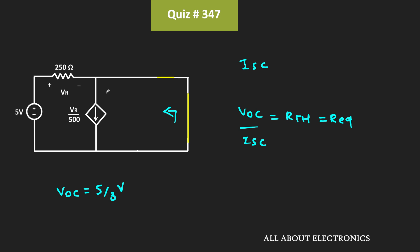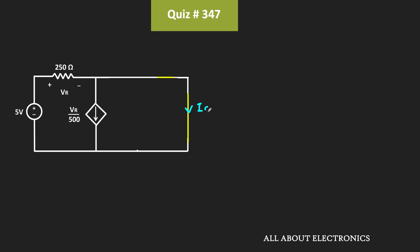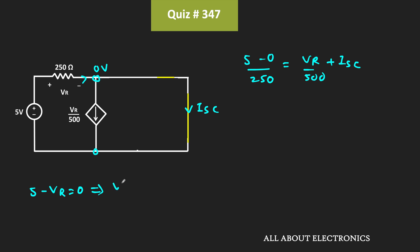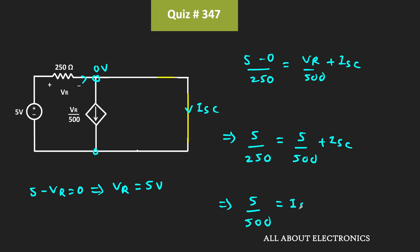Looking at the equivalent circuit after shorting, we apply KCL at this node. Taking this node as reference at 0V, we write: (5 - 0)/250Ω = VR/500Ω + Isc. In this case, 5 - VR = 0, so VR = 5V. Therefore: 5/250 = 5/500 + Isc, which gives Isc = 5/500 = 0.01 A.